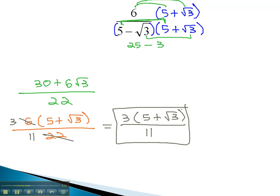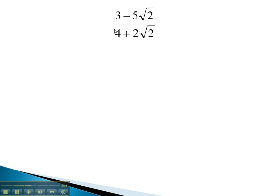Let's try another problem where we have to multiply by the conjugate in order to simplify the expression. Here we have 4+2√2. The conjugate will be exactly the same with subtraction, 4-2√2, in the numerator and denominator.